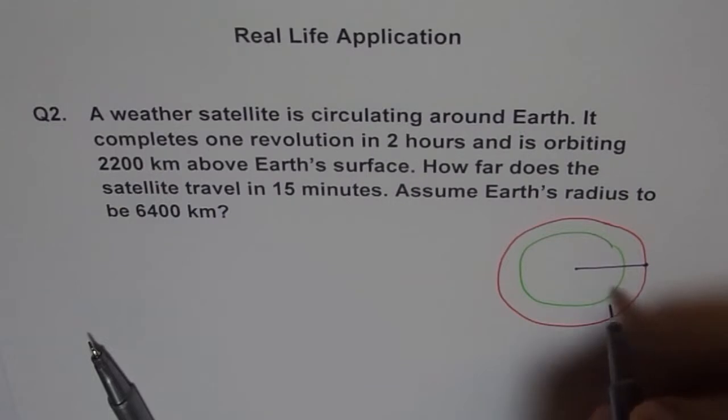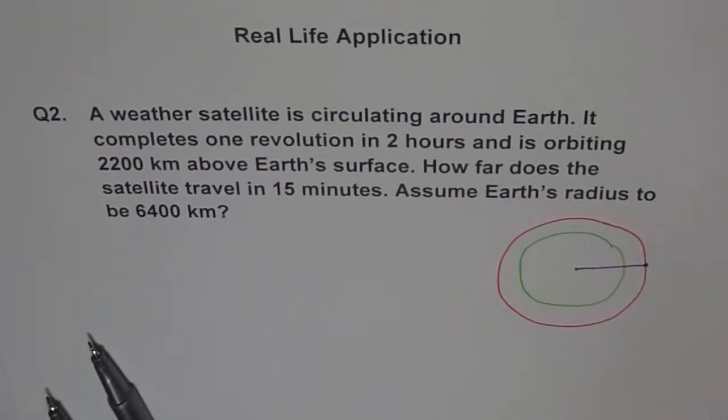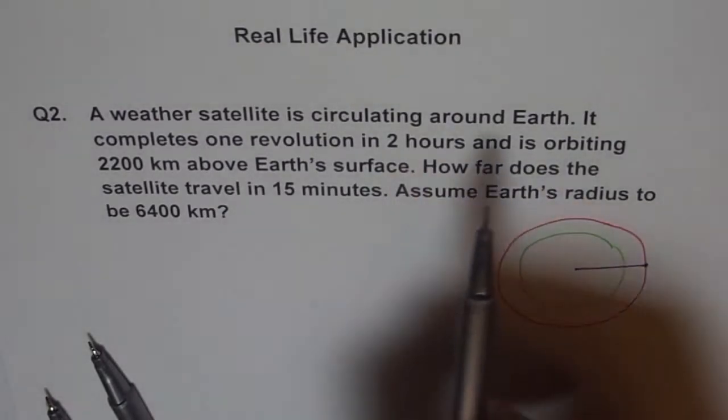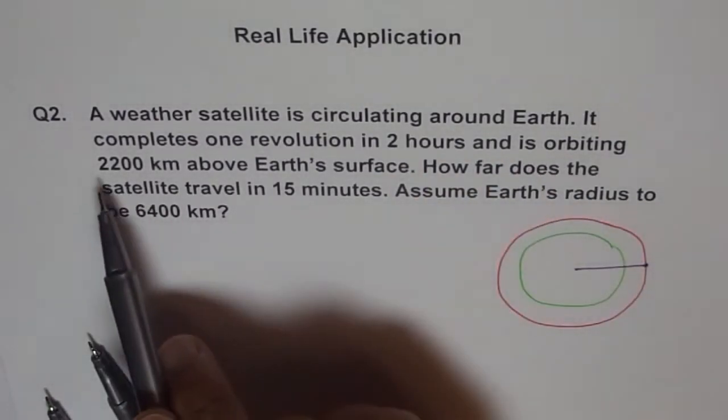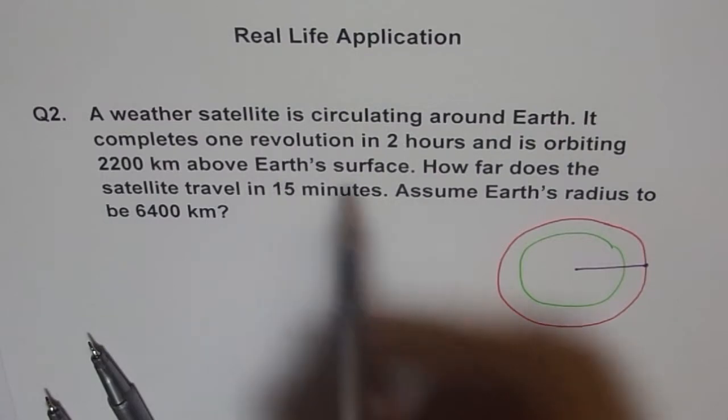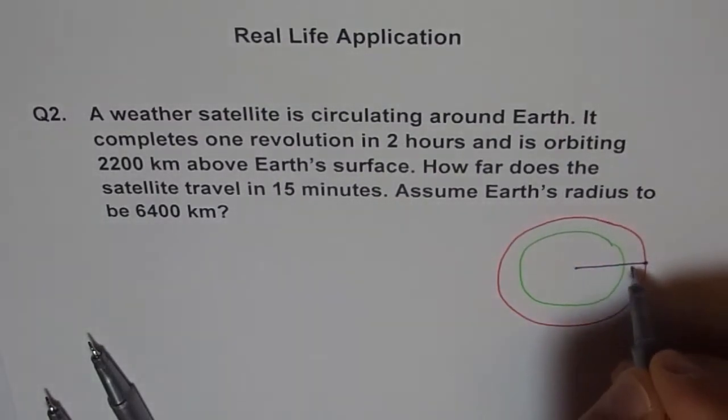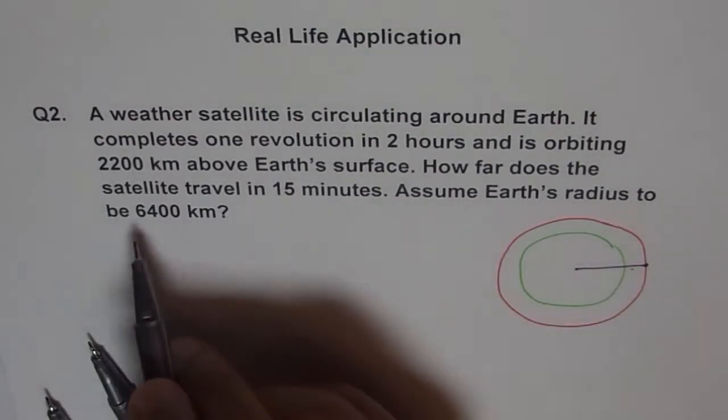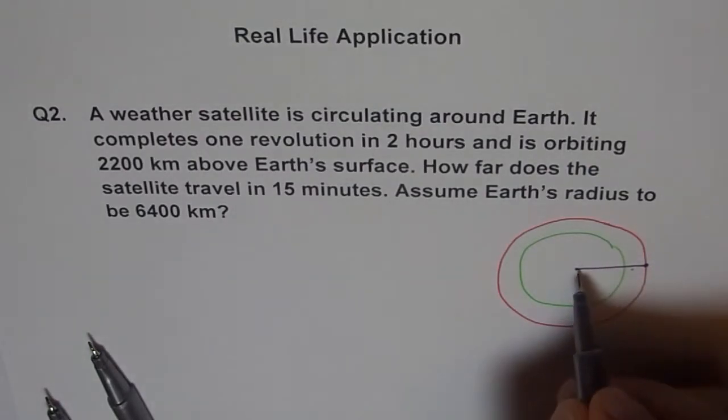Now, what is going to be the distance from center to here? We know from center we see like this. It's orbiting 2200 km above Earth's surface. So this is 2200 and 6400 is the kilometer distance from center to the Earth itself. So we are taking from center to the core, right? So 6400 is this.